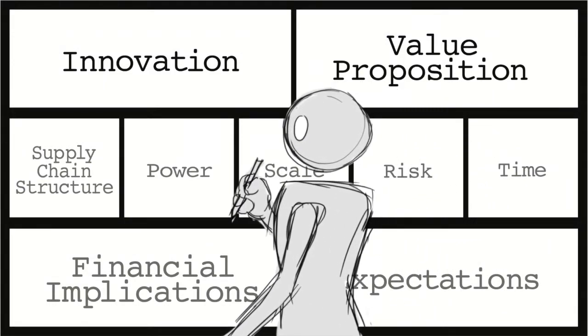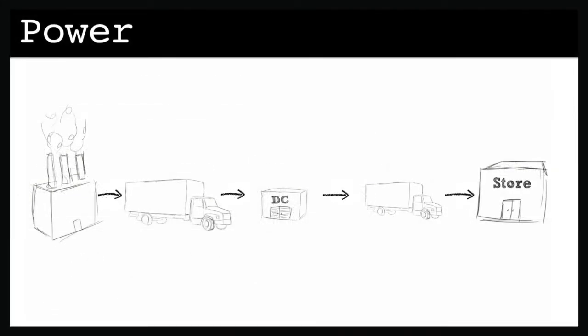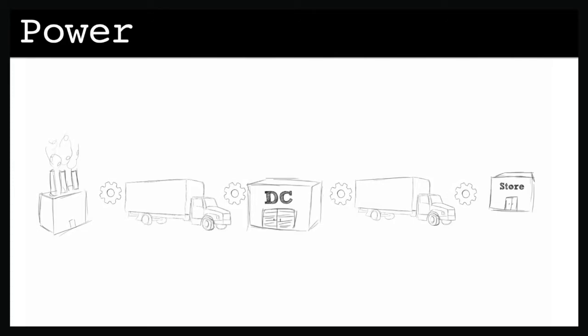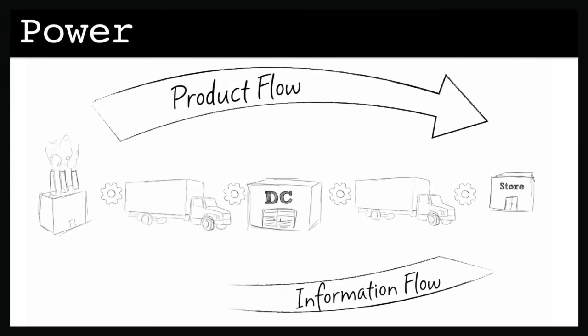Power is next. First, an innovation might shift power among supply chain members, increasing or decreasing relative competitive strength. If the innovation affects product flow or information flow, power refers to decision-making power.